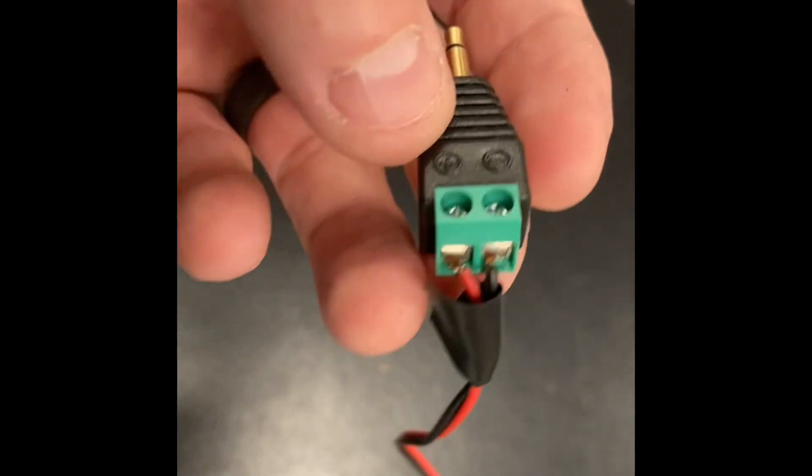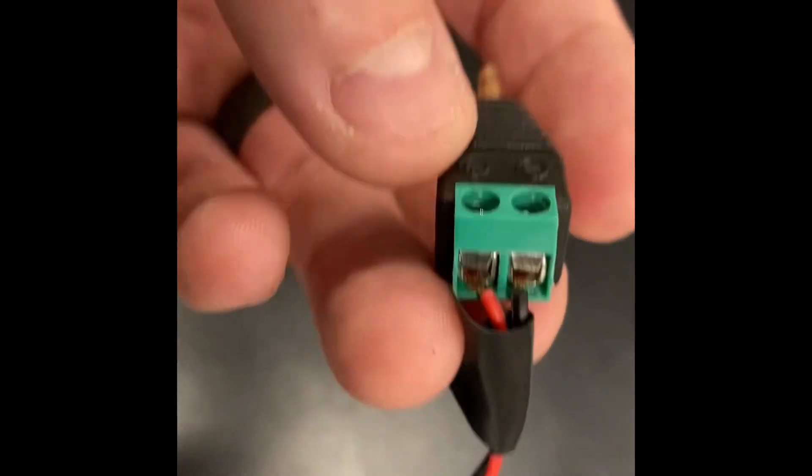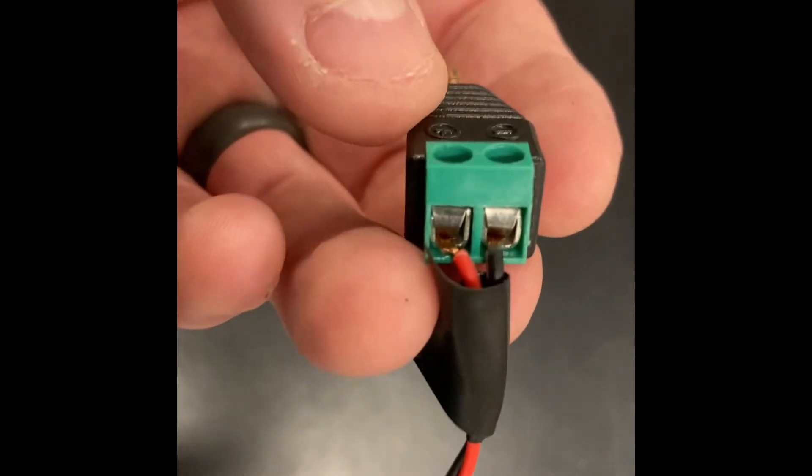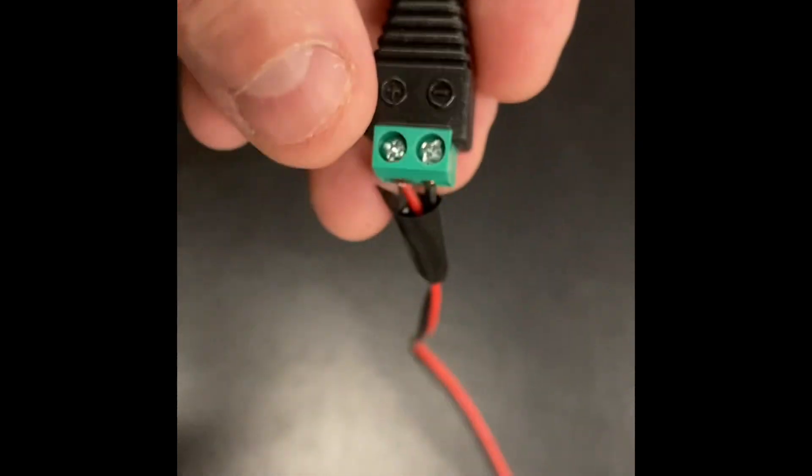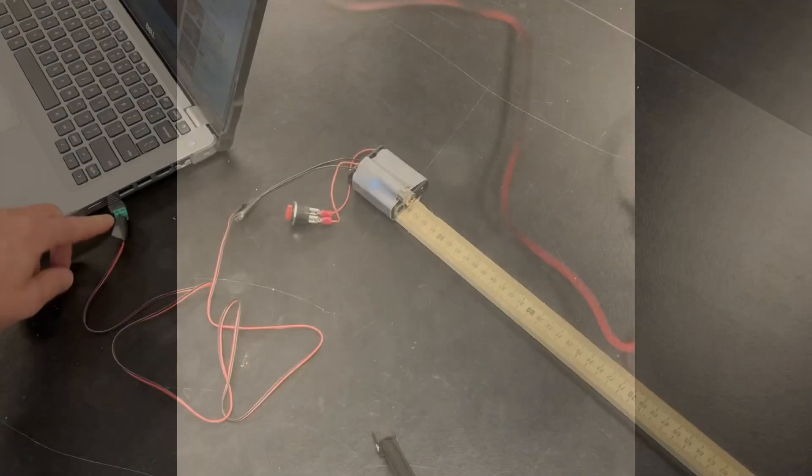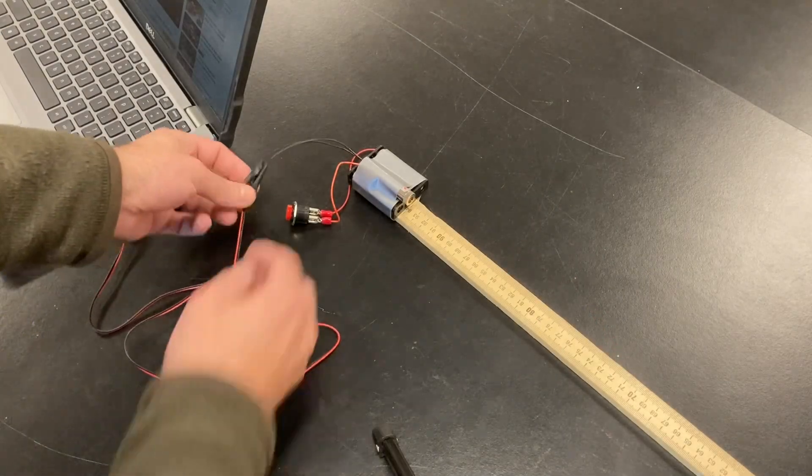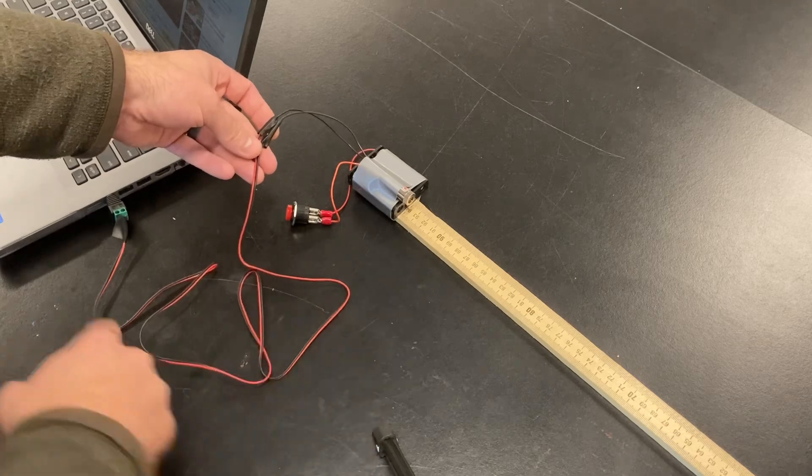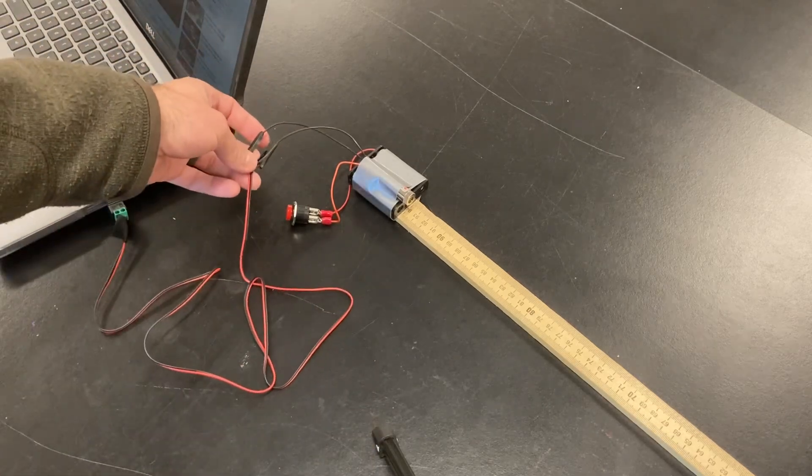It's a 3.5 millimeter adapter with screw-in terminals, which makes it really easy to connect positive and negative. I can screw in those two wires, and so that path is interrupted by the auxiliary jack.